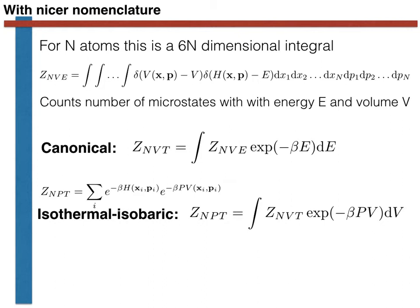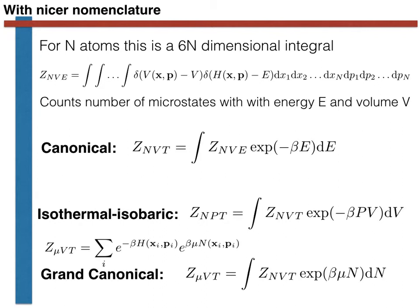Lastly, the grand canonical partition function, which for a discrete phase space is a sum, can be rewritten for a continuous phase space as the corresponding integral. These integrals that connect the partition functions are very useful. There is, however, another even more useful trick we can introduce once we understand the basis of this idea.